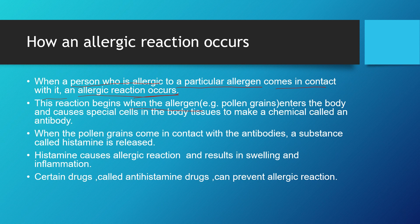This causes the special cells in the body tissues to make a chemical reaction with the antibody. When the pollen grains come in contact with the antibodies, a substance called histamine is released. Histamine causes the allergic reaction which results in swelling and inflammation. So histamine is causing the allergic reaction which leads to inflammation in the body.